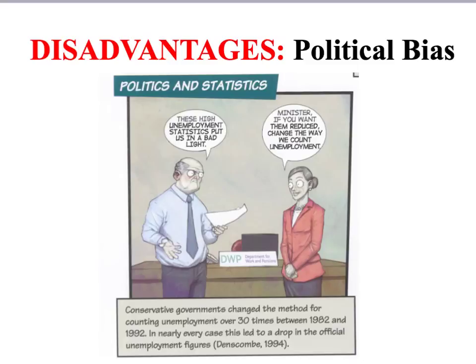Another important reason to treat certain forms of official statistics with caution is that official statistics are government statistics, and they therefore might be politically biased. For example, the Conservative government of the 1980s and 1990s famously changed the way in which unemployment was defined and counted over 30 times, and every change but one resulted in a decrease in unemployment numbers.